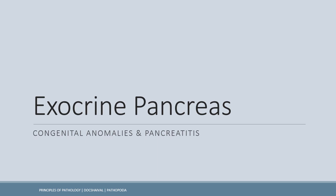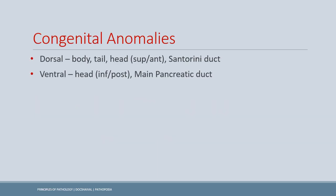Recall that the pancreas is a retroperitoneal organ. It develops from two primordia — the dorsal and ventral pancreatic primordia — which are pouchings of the foregut that fuse together to form the pancreas. The ventral part forms the main pancreatic duct, and the inferior posterior portion of the head is formed by the ventral primordia.